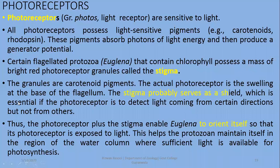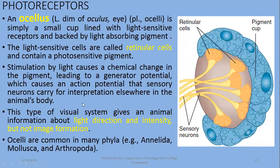The actual photoreceptor is the swelling at the base of the flagellum. The stigma — composed of carotenoid pigments — probably serves as a shield, which is essential so that the photoreceptor can detect light coming from certain directions but not from others. The photoreceptor plus stigma enables euglena to orient itself according to the light.